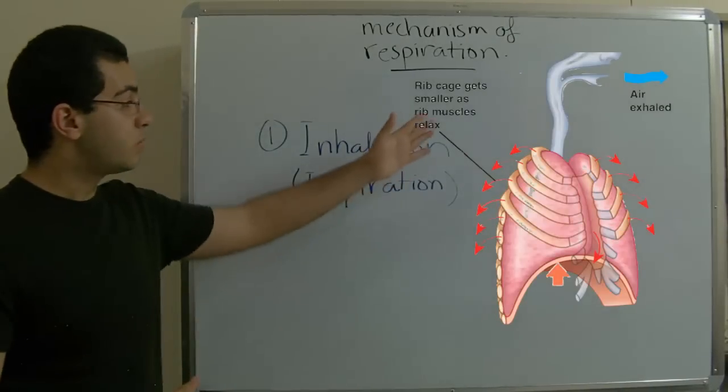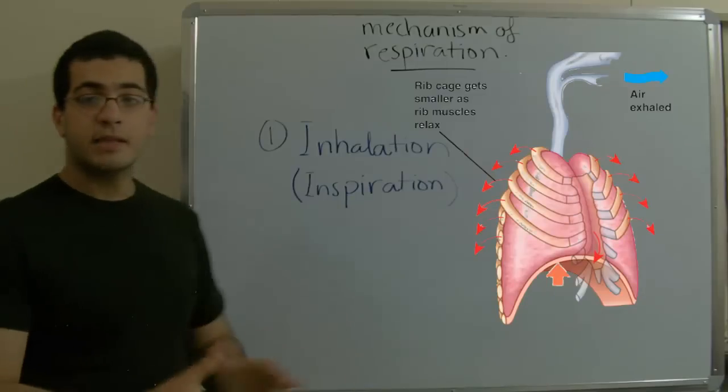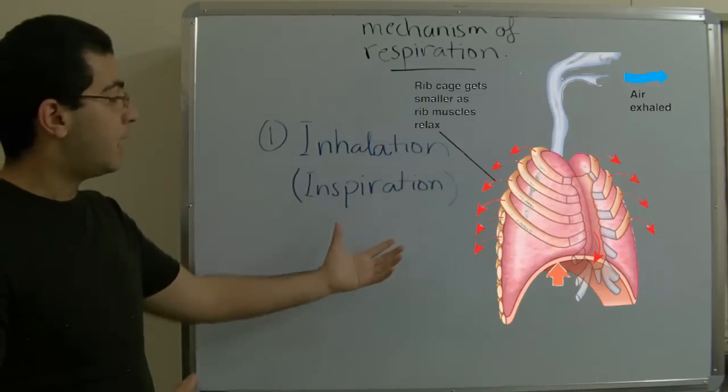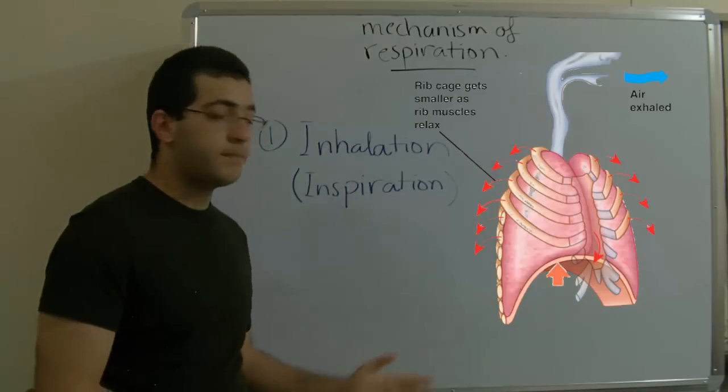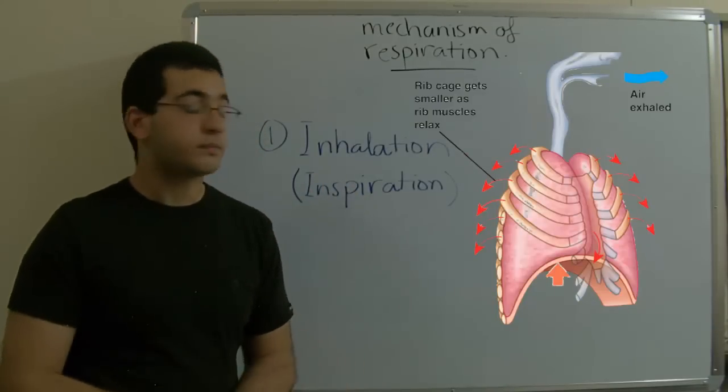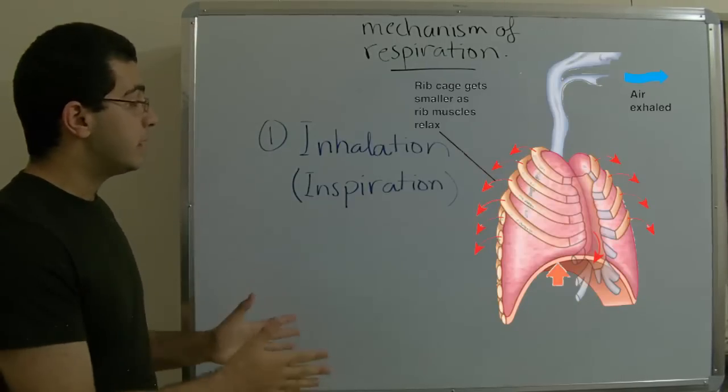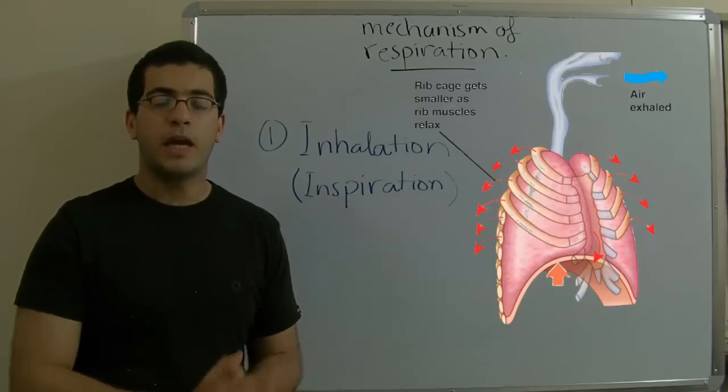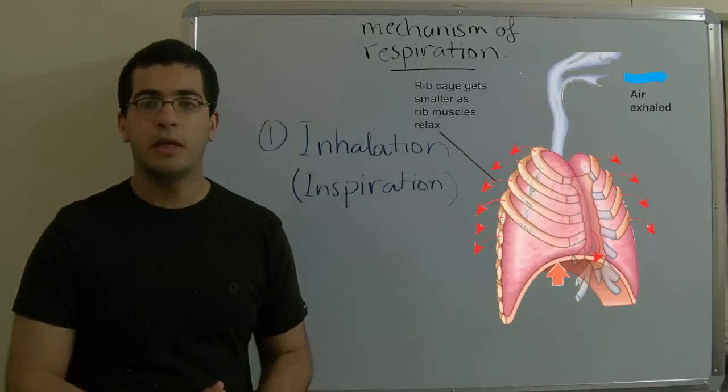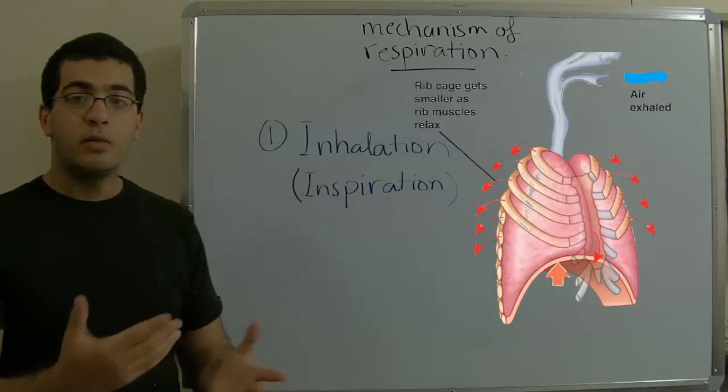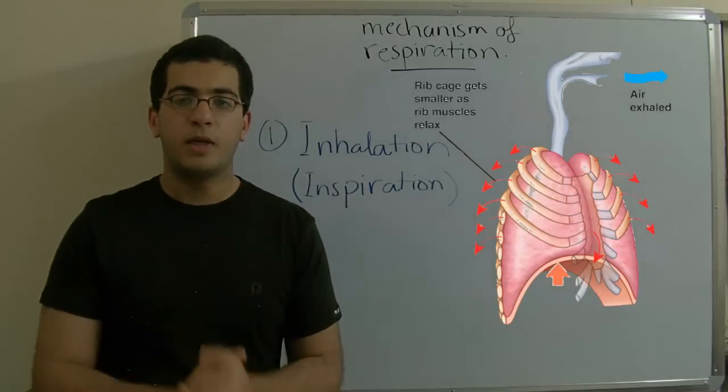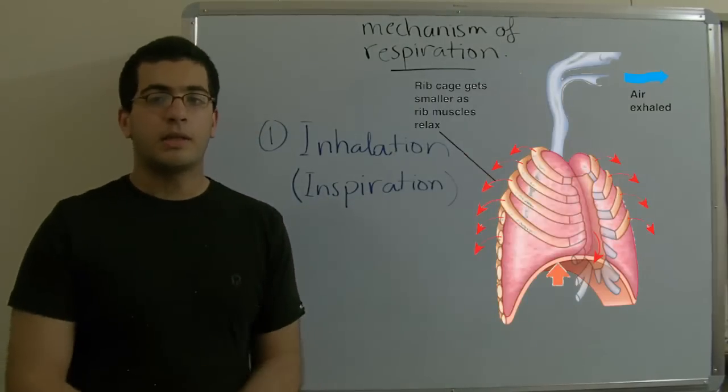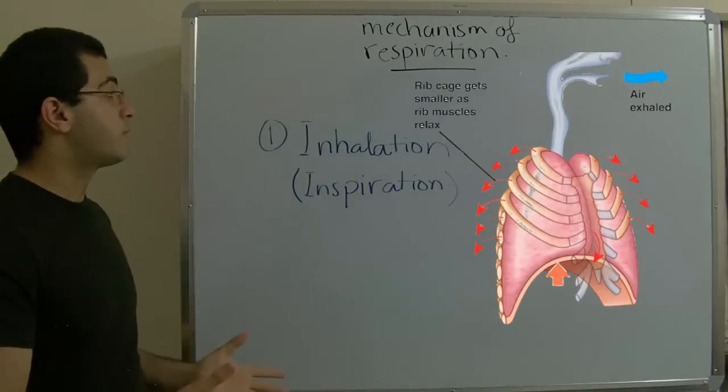So the muscles which surround the ribs relax, leading to the contraction of the rib cage. And also the diaphragm relaxes, as we can see here. And this leads to decreasing the volume of the rib cage and so decreasing the volume of the lungs. So the part of the air which entered in order to fill the empty area during the inhalation process goes outside the body during the exhalation process. This is briefly the mechanism of respiration.